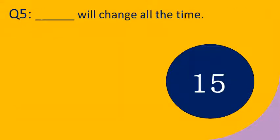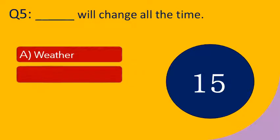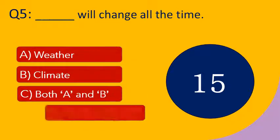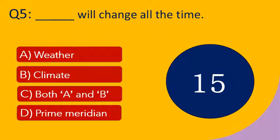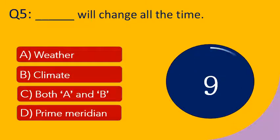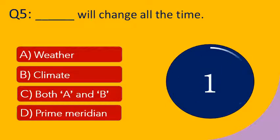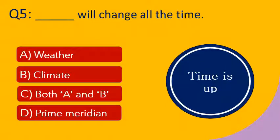Question number 5: Dash will change all the time. Options are A. Weather, B. Climate, C. Both A and B, and D. Prime Meridian. Your time starts now. Your time is up. The right answer is weather. Weather will change all the time.